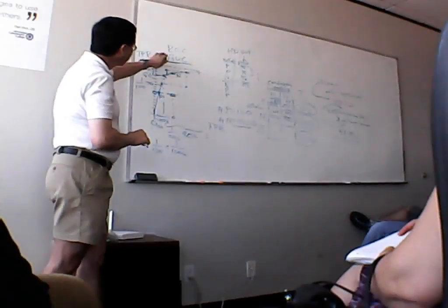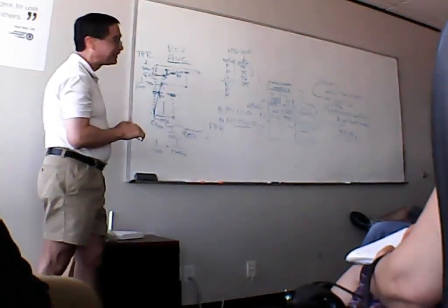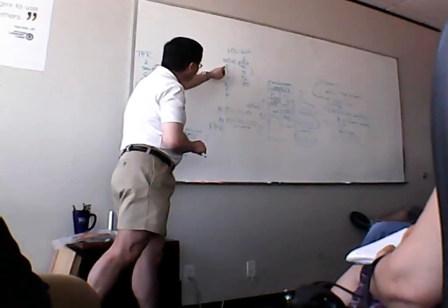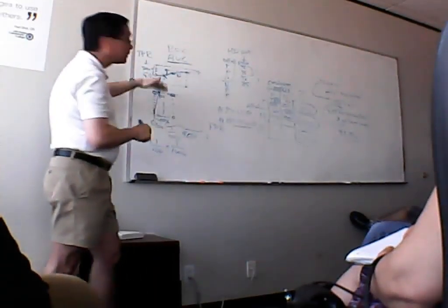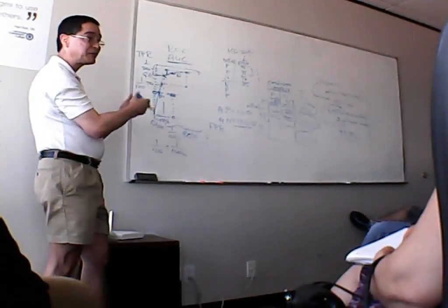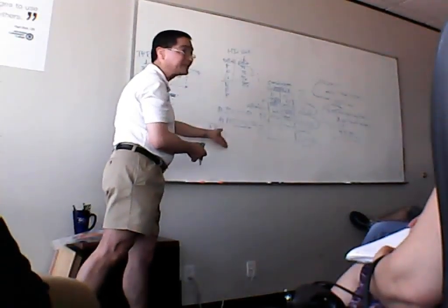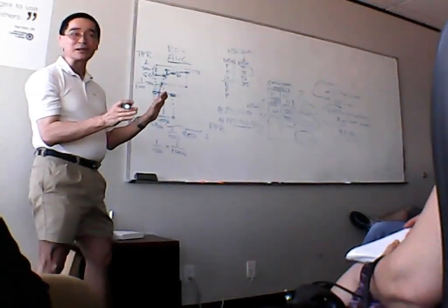So, area under the curve is defined as the probability, if you pick any positive event, one positive event, and one negative event, that the positive event was found first, or was ranked first in this order here. That really means very little, I think.